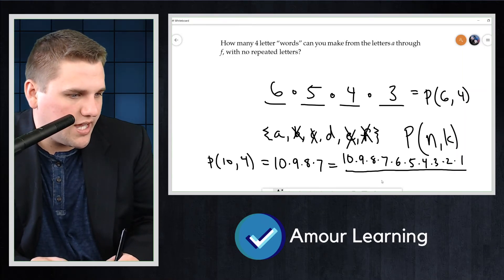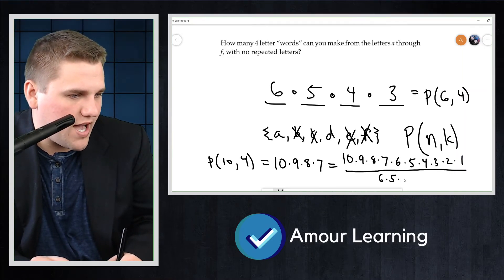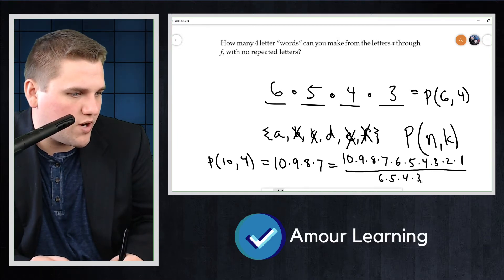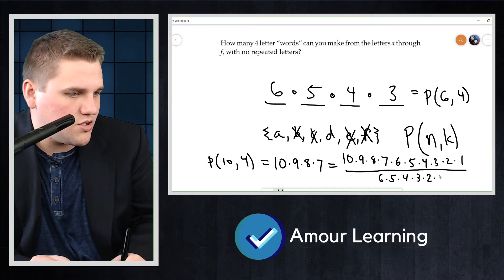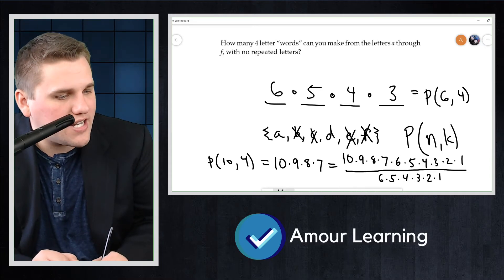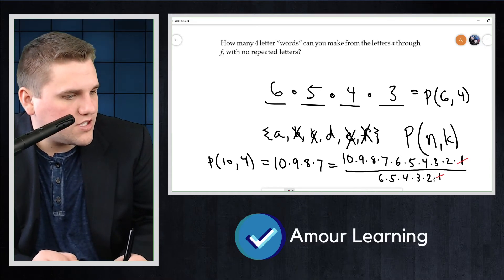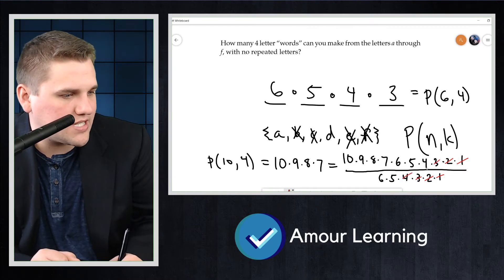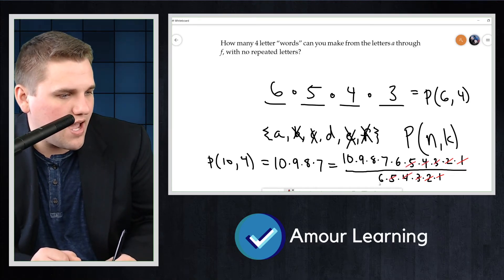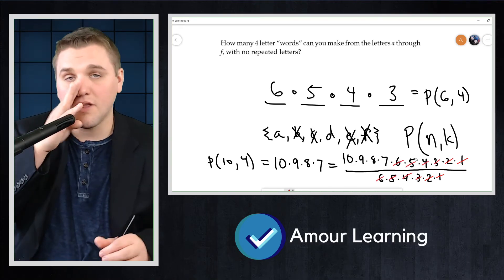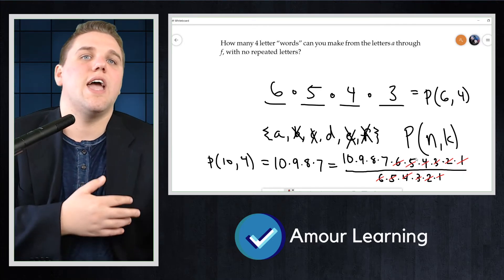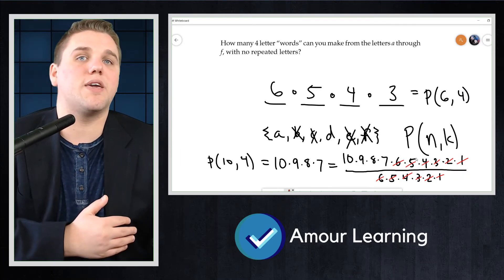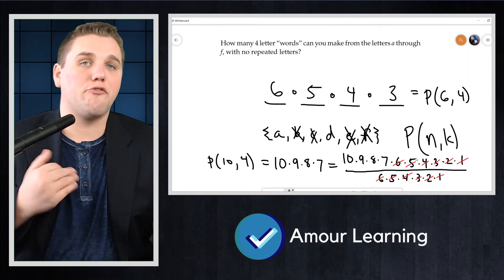They're very similar, but we want to stop at seven. So we're going to divide away the leftover junk that we don't need, namely 6 times 5 times 4 times 3 times 2 times 1. So that these terms cancel and we're left with 10 times 9 times 8 times 7 and then stopping. So that's another way of representing this, and it's important that we represent it this way because we can actually later develop a formula.